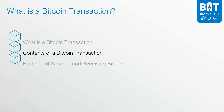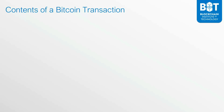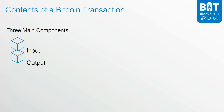Let's discuss now the contents of a Bitcoin transaction. When you look at the contents of a Bitcoin transaction, it has three main components: the first one is an input, the second one is the output, and the third one is the amount.